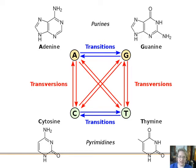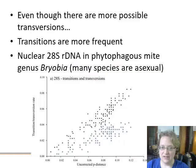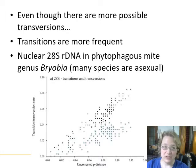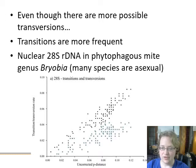There are more ways to have a transversion, but transitions are more common and more likely to be left in the DNA. There's an interesting paper about nuclear DNA in asexual mite species showing that the rate of transitions occurring in the DNA over time is much higher than the rate of transversions.